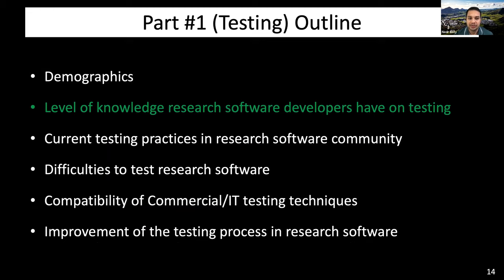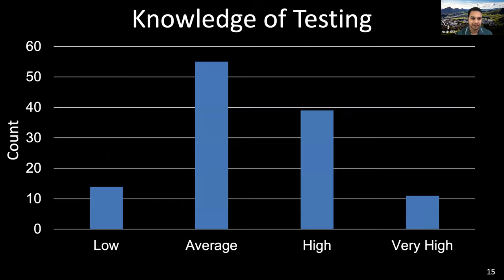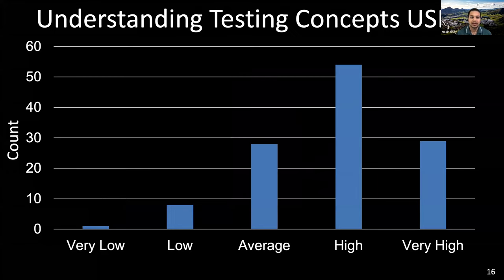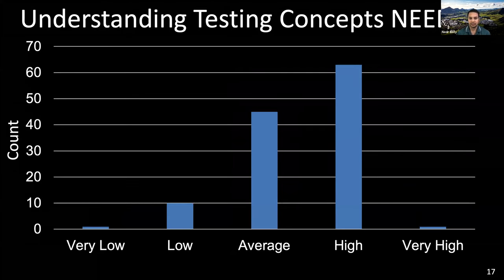Regarding what level of knowledge research software developers have on testing: we asked how confident they are in their knowledge of software testing. Most respondents mentioned at least an average level of confidence, and more than one third indicated high or very high confidence. When asked about their understanding of the testing concepts used in their project, more than half mentioned high or very high understanding, and only a few mentioned low or very low. In terms of understanding the testing concepts needed in their project, responses were overwhelmingly in the range of average and high.